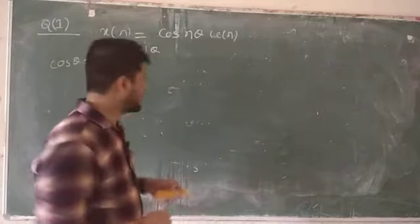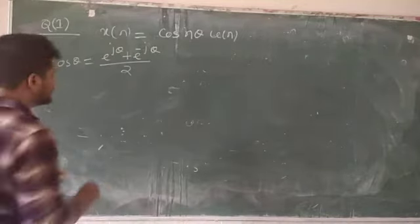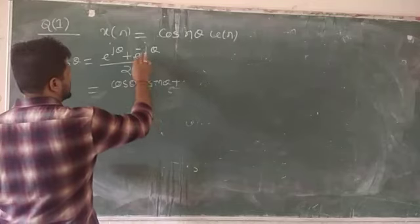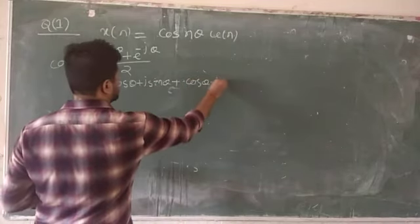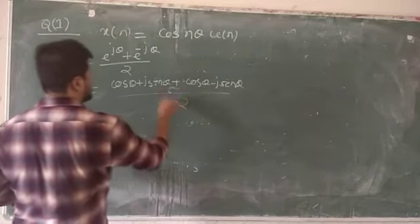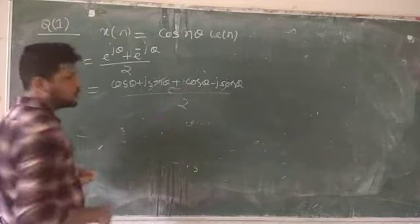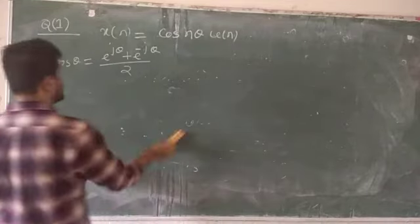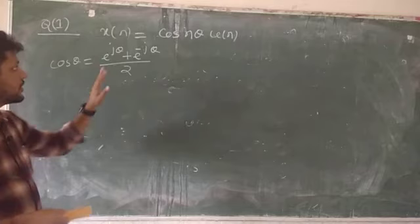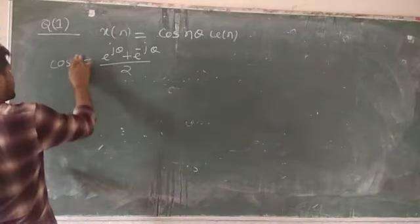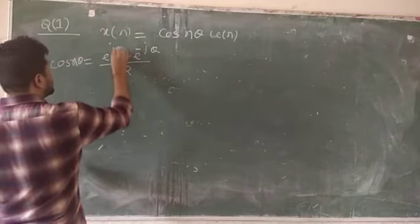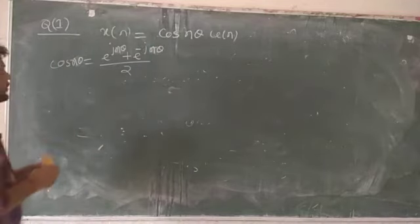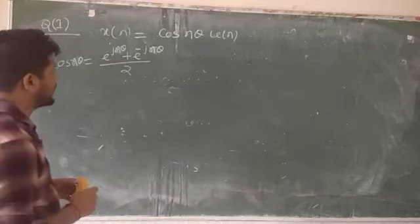cos(θ) = (e^(jθ) + e^(−jθ)) / 2. Proof: e^(jθ) = cos θ + j·sin θ, and e^(−jθ) = cos θ − j·sin θ. Adding and dividing by 2 gives cos θ. Therefore cos(nθ) = (e^(jnθ) + e^(−jnθ)) / 2.